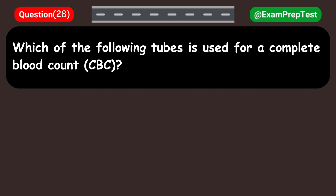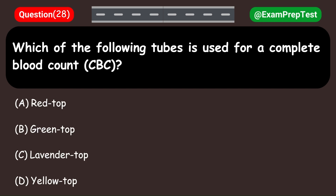Which of the following tubes is used for a complete blood count (CBC)? A. Red top. B. Green top. C. Lavender top. D. Yellow top. Answer: C. Lavender top.